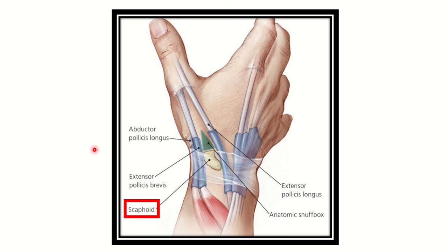Here we can see the anatomical snuffbox — this area between the two sides of the tendon. The anterolateral boundary is bounded by extensor pollicis brevis and abductor pollicis longus, and the posteromedial boundary is bounded by extensor pollicis longus.